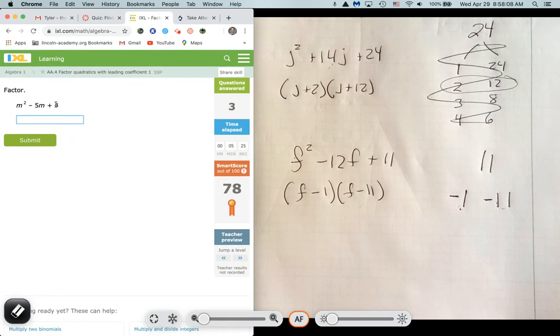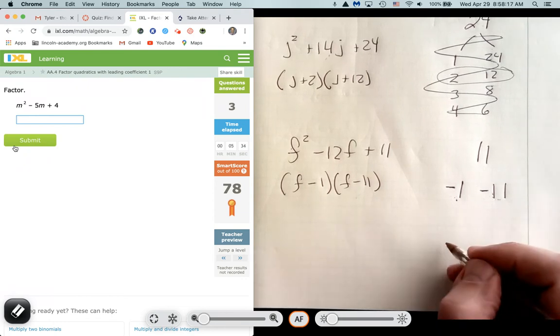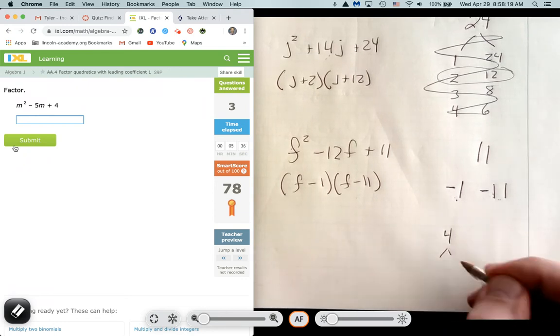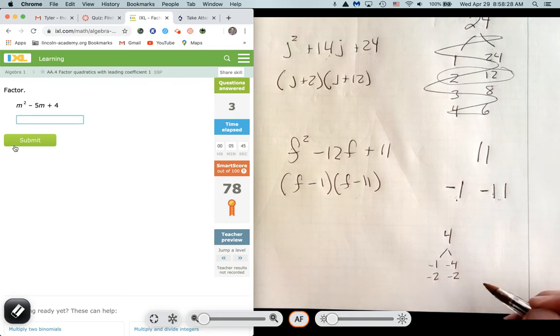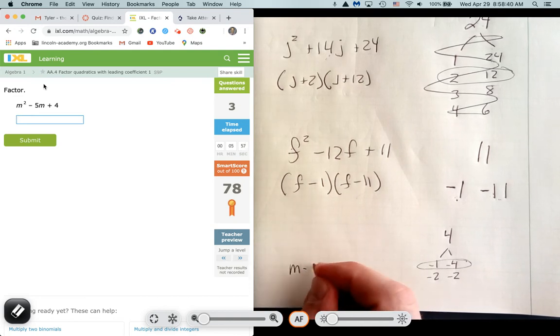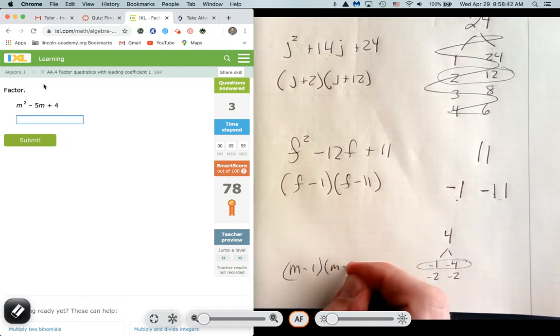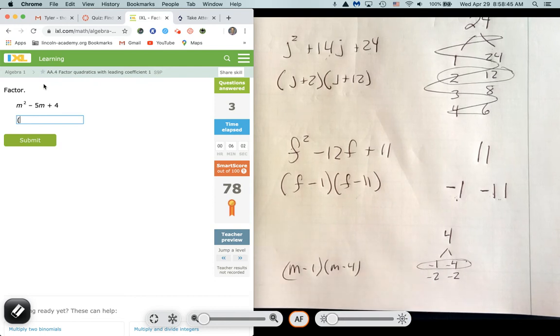So again, if that last term is positive and the middle term is negative, both the factors are negative. So I'm going to take that 4 and I'm going to think, okay, what two factors of 4, I have 1 times 4 and I have 2 times 2, but they're both negatives to give me that positive product, that positive product here of the third term, but they're adding the two negatives gives me that negative sum. And obviously the negative 1 and the negative 4 work. So that would be an M minus 1 and an M minus 4 to give me that factored form. M minus 1, M minus 4.